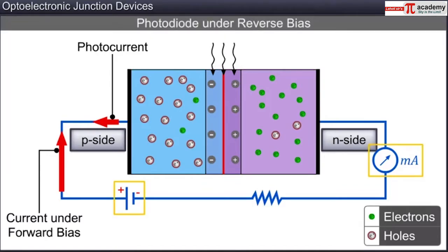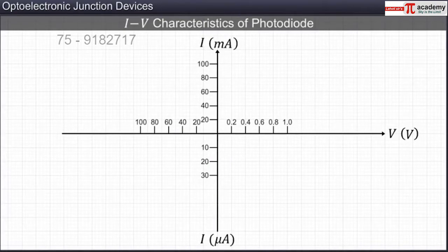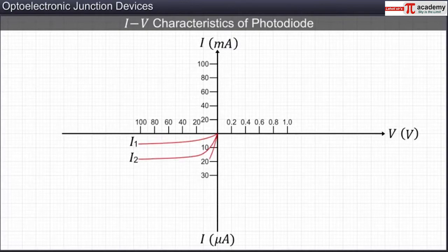However, the change in the magnitude of the photocurrent with the intensity of the incident light can be measured when a small current flows through the diode under reverse bias. Thus, a photodiode is always operated under reverse bias. The IV characteristics of a reverse biased photodiode for different intensities of incident light are shown here.